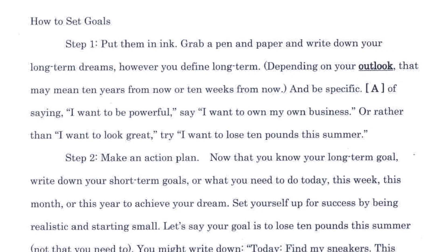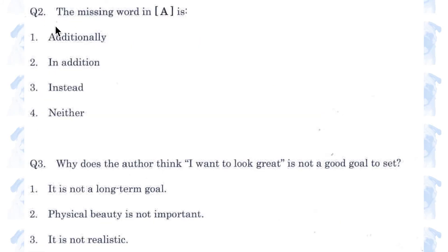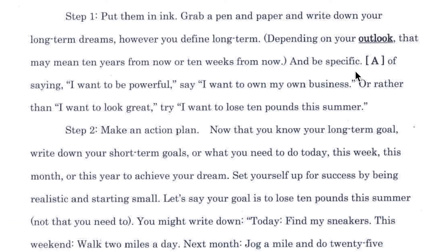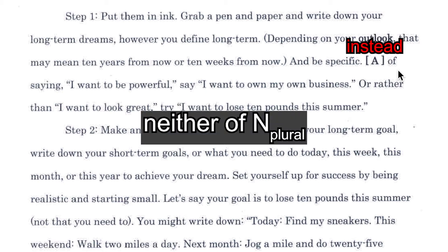Question 2. The missing word in A is: additionally / in addition / instead / neither. Number 1 and number 2 mean exactly the same thing, so both can be eliminated. The answer is 'instead'. 'Instead of saying...' — you would never say 'neither of saying'. The phrase 'neither of' is usually followed by a plural noun.